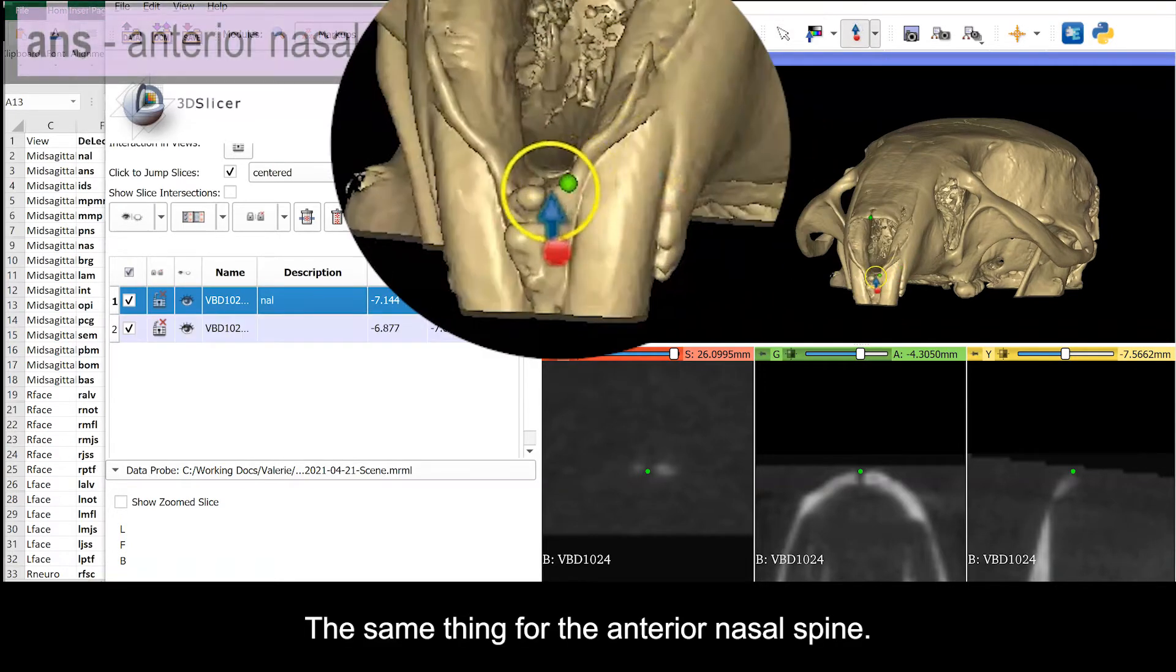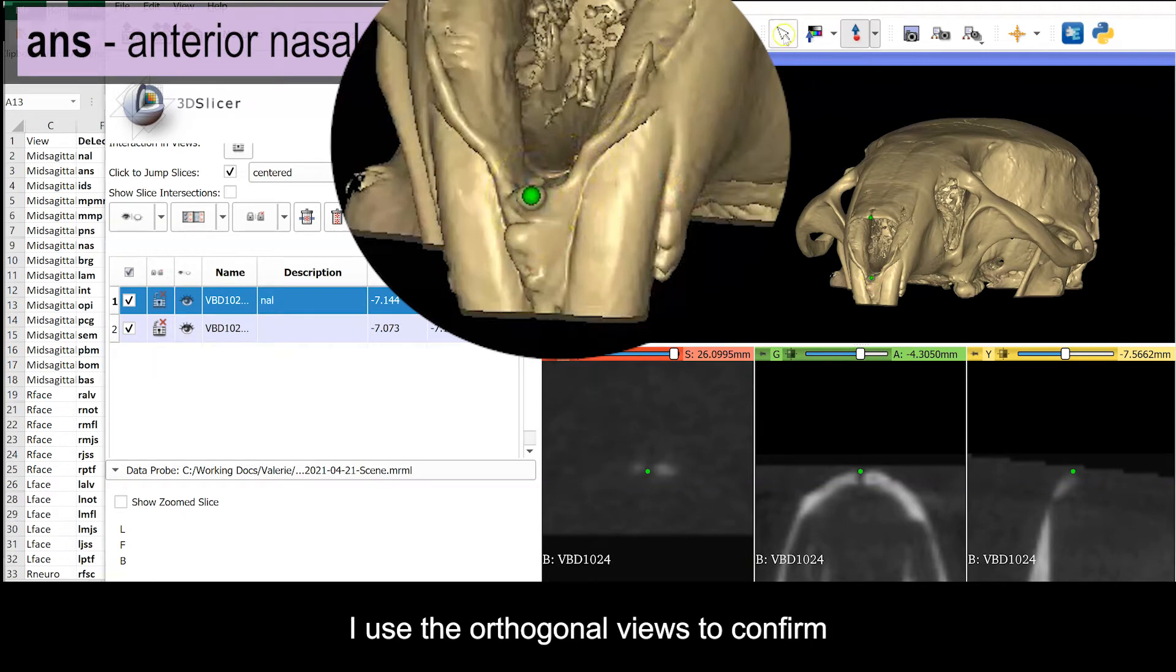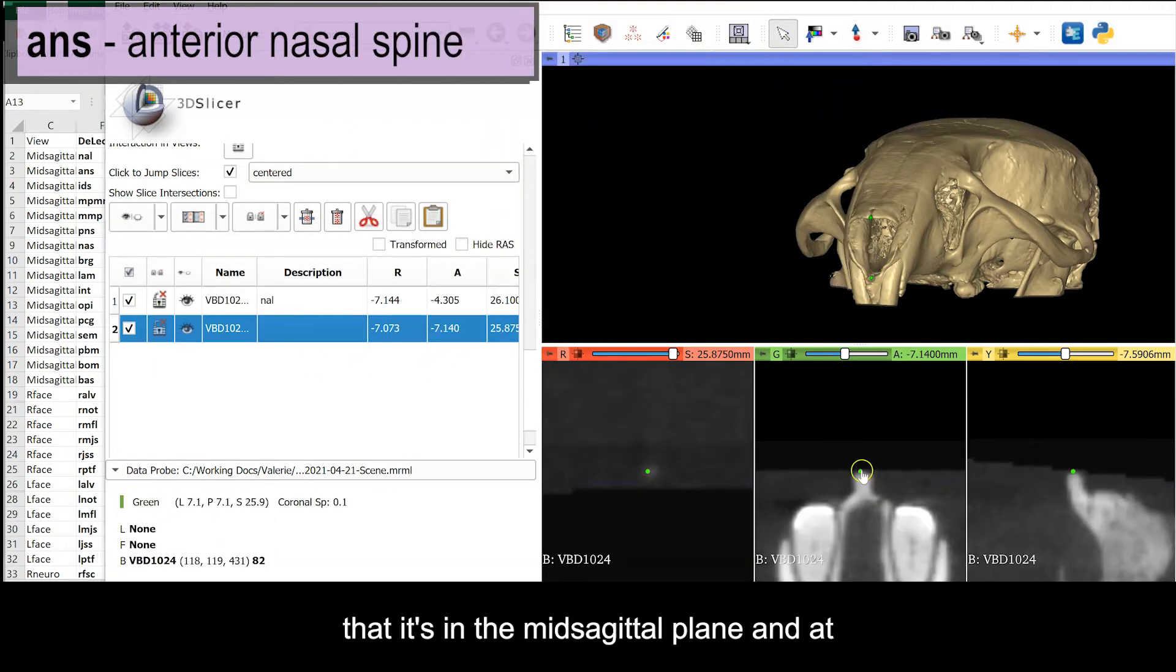The same thing for the anterior nasal spine. I use the orthogonal views to confirm that it's in the mid-sagittal plane, and at the most rostral point on this process.